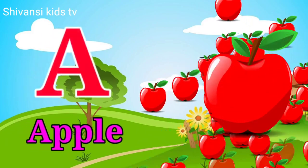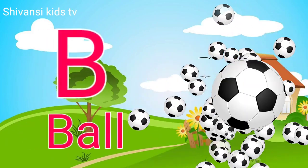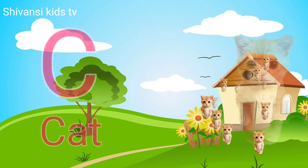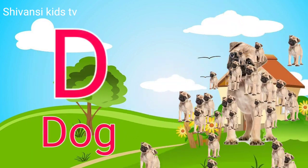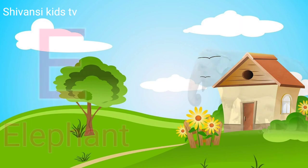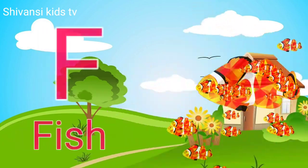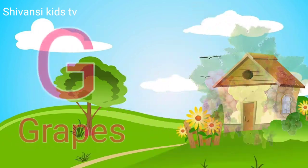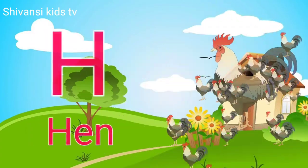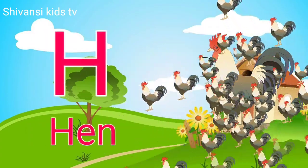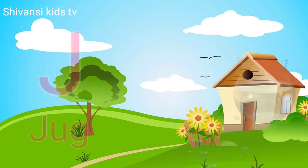A for apple, B for ball, C for cat, D for dog, E for elephant, F for fish, G for grapes, H for hand, I for ice cream, J for jug.